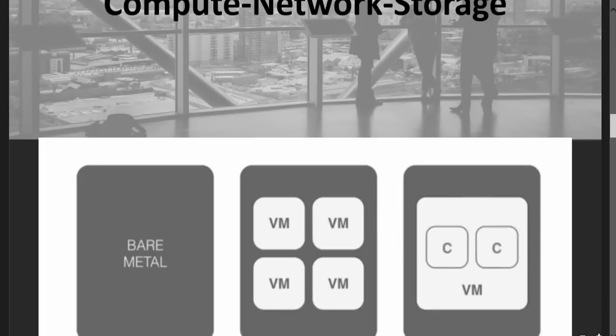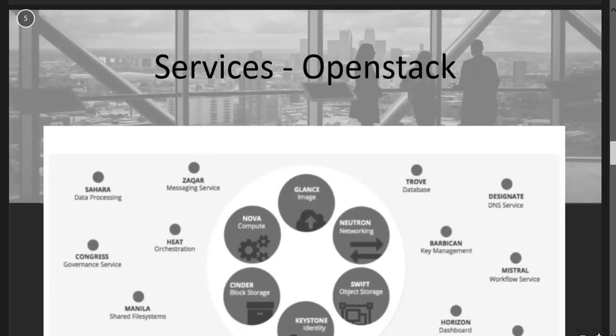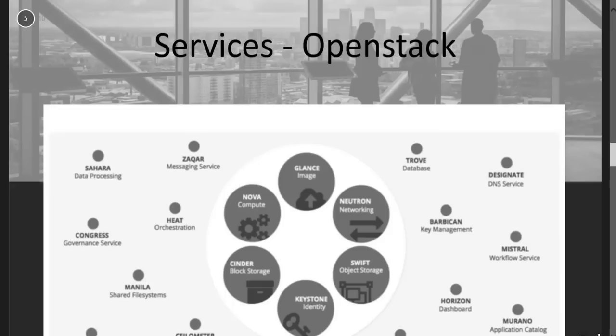Let's have a look at the services of OpenStack. The major services are compute, storage, and network, which are in the center. There are also many other services designed by the community. The primary services you can see at a glance are Neutron, Swift, Keystone, Cinder, and Nova. There are many other services built around these core capabilities as well.